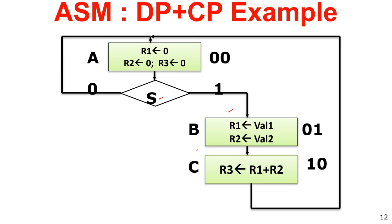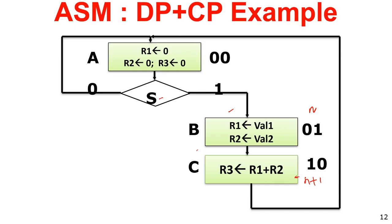For how many cycles? In the next cycle when S is 1, it will execute state B; in the next plus one cycle it will execute state C. After that it will reset to state A because state A issues the clear signal. The computed value stays in R3 for only one cycle because whenever it reaches state A, the clear signal is issued and the value gets erased.